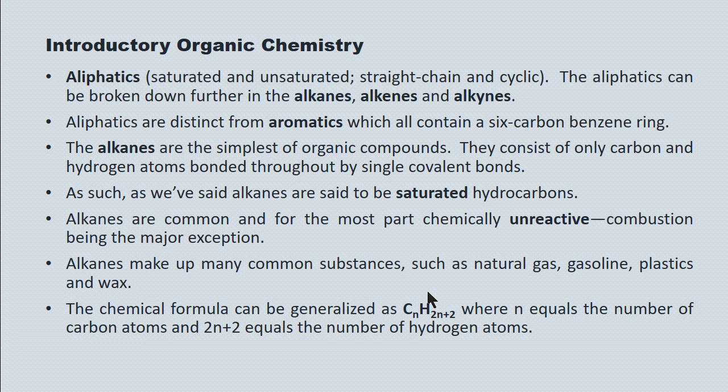The general chemical formula for an alkane is CnH2n plus 2, where n equals the number of carbon atoms, and 2n plus 2 equals the number of hydrogen atoms.